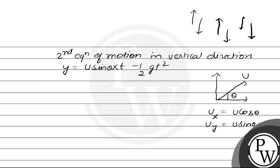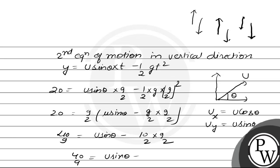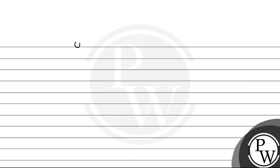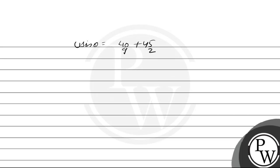Substituting the known values: y = 20 meters, t = 9/2 seconds. We get 20 = u·sinθ·(9/2) − ½·g·(9/2)². This gives u·sinθ·(40/9) − 45/2 = 20. Solving further, u·sinθ = 485/18.